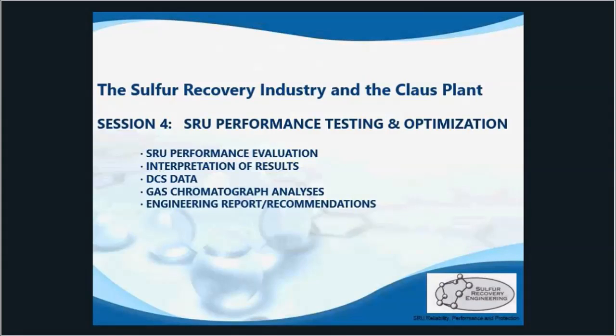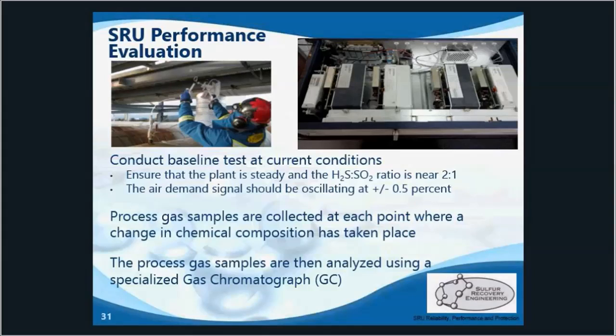We'll talk about the performance testing that we at SRU do and how to optimize. Performance evaluations must be conducted to ascertain the current operating conditions for each of the individual units. Prior to beginning the testing of an SRU, it's imperative that we ensure the plant is steady at the 2 to 1 H2S to SO2 ratio and that the air demand signal is oscillating between plus or minus 0.5%.